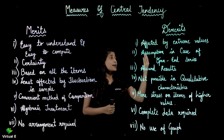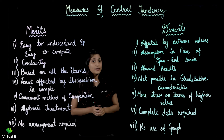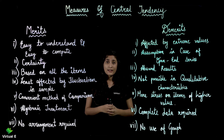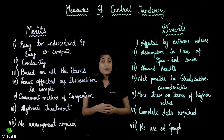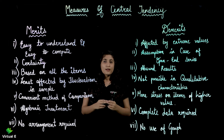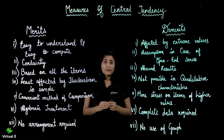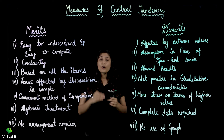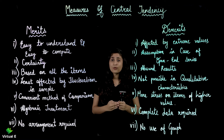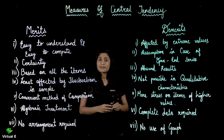The next demerit is assumption in case of open-end series. We saw that in the special case of an open-end series, the first class and last class have missing limits. You have to assume them yourself. Until you assume them, you cannot form the class interval, and without the class interval, calculation cannot proceed. So that is a demerit because you have to go on your own assumption.